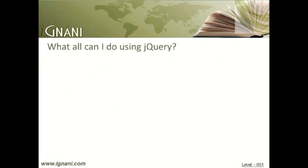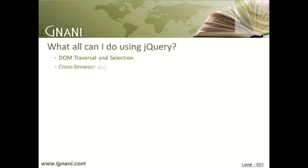What all can I do using jQuery? jQuery makes it easy to write powerful JavaScript apps and create amazing animation effects, even rivaling those that use Flash or Silverlight. jQuery library can be used for DOM traversal and selection. To traverse and access elements in a document object model tree, it takes a lot of code to be written. jQuery provides a robust and efficient mechanism to easily traverse through the DOM and retrieve the exact piece of the document that is to be inspected or manipulated.